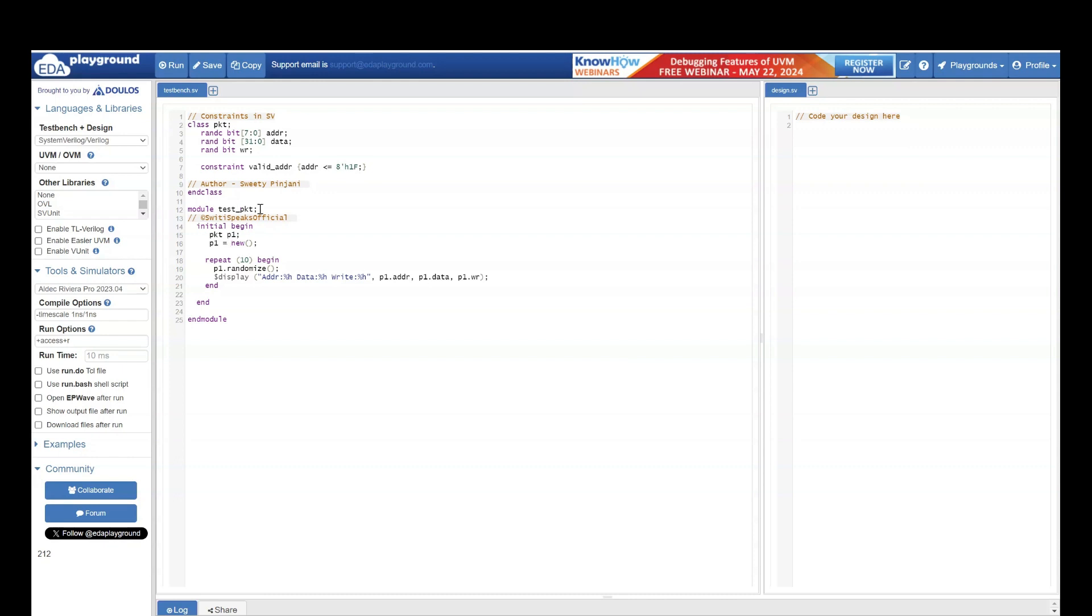Now I have a module test packet in which I am creating an object of class packet. P1 is my object. I have a class constructor. In case you did not go through SystemVerilog series, please go through that where we have discussed about class, objects, constructors in detail. So this is where I am creating an object of class packet. I am calling the constructor so that the memory also gets allocated for this class object. Then 10 times I am generating a random value for the object P1. And I am displaying those values. Now let us run this and see what is the output.